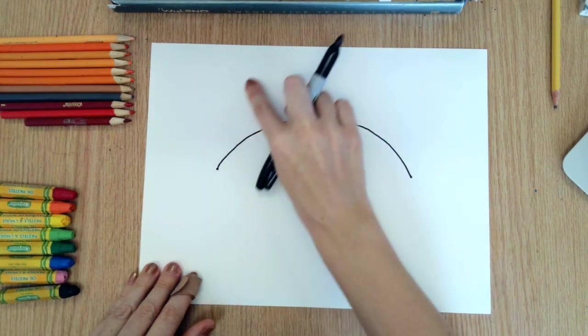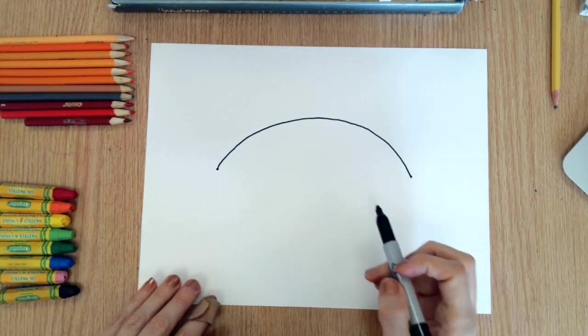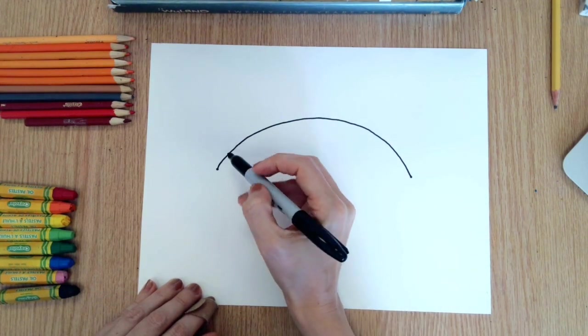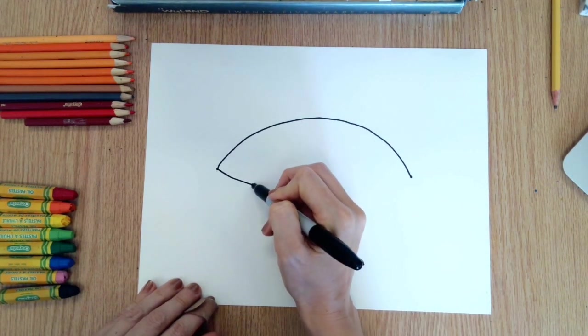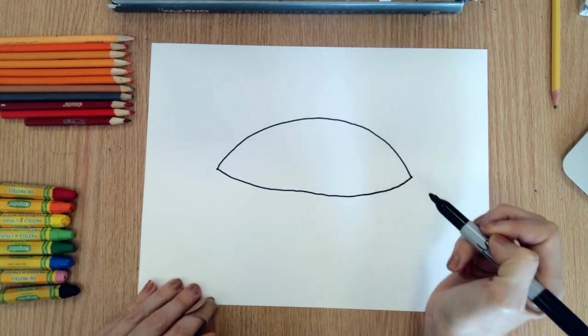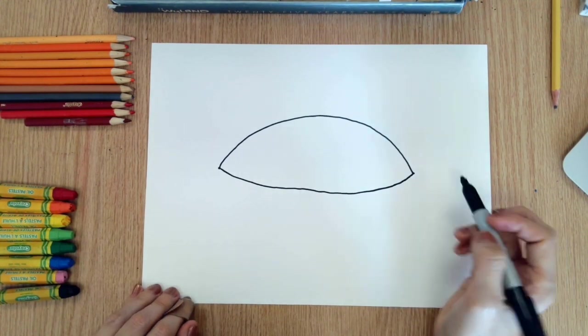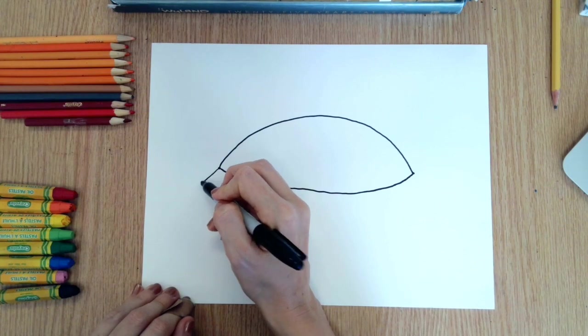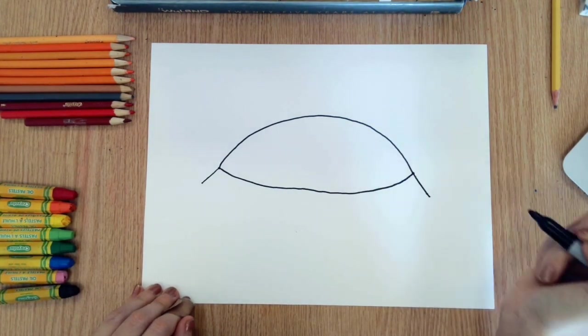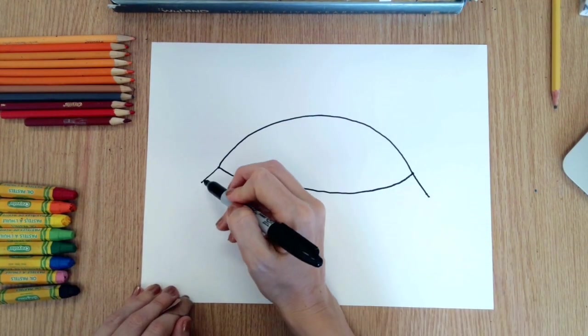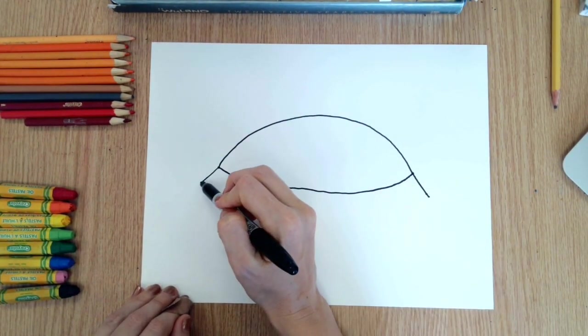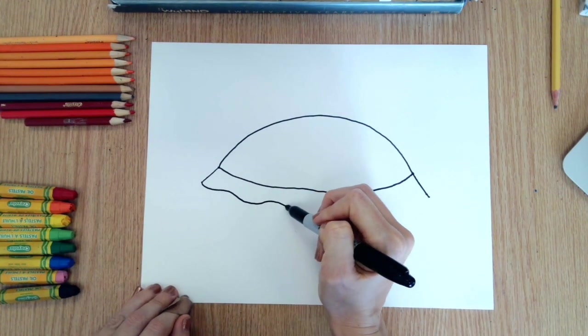Next I'm gonna close this line but instead of going straight I'm gonna make a curved line like that. Next I'm gonna make a line on the left, then I'm gonna make a line coming down on the right. Then you're gonna close this line by creating a wavy line. This is the crust of the pie.